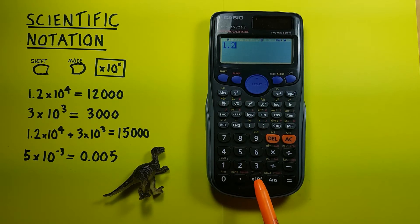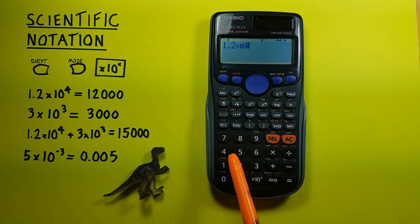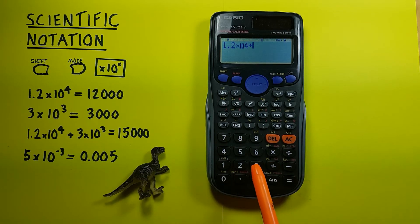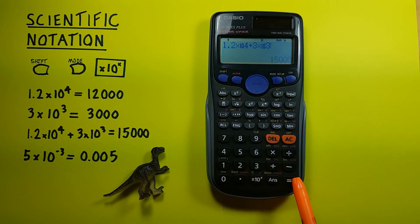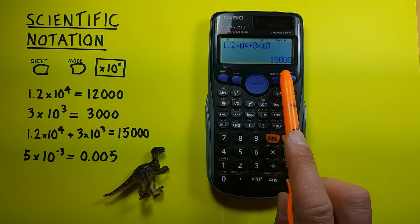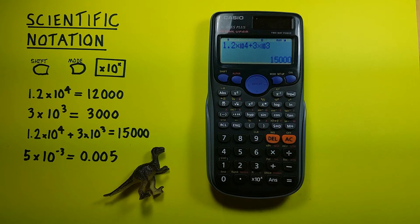1.2 times 10 to the power of 4 plus 3 times 10 to the power of 3, and press equals. And we see this gives us 15,000, which is correct.